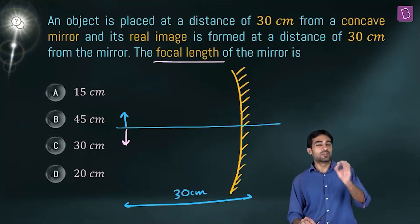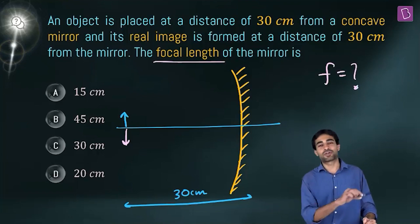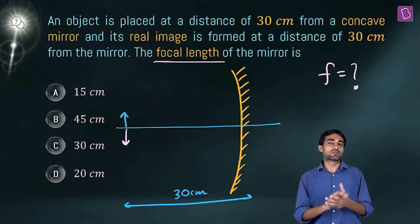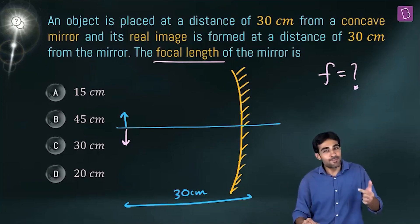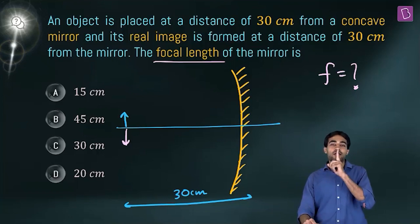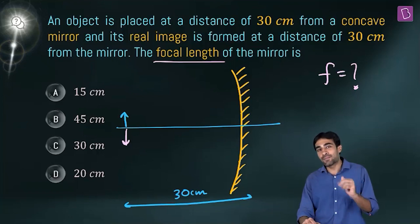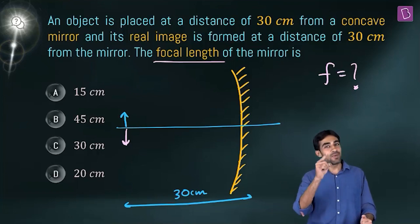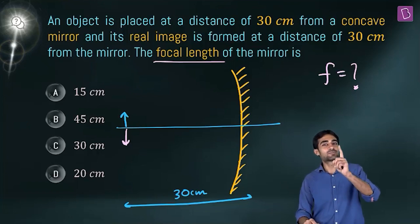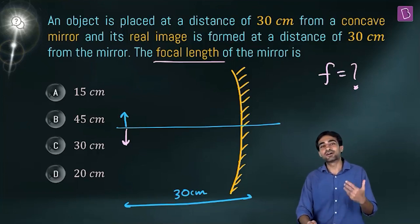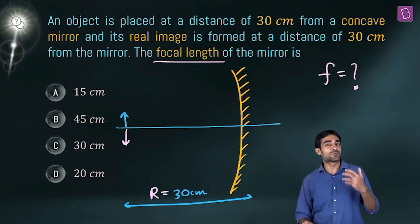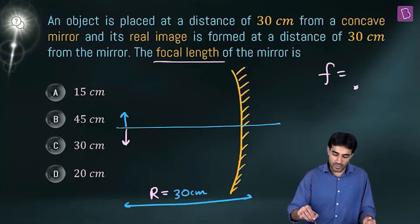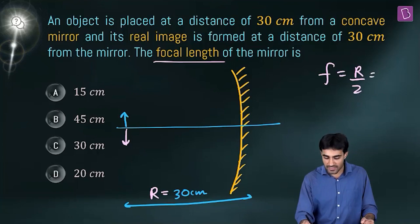We need to find the focal length. When the object is placed at the center of curvature, the image is also formed at the center of curvature. In our case, object distance equals image distance, so the object must be placed at the center of curvature. The radius of curvature is 30 centimeters, and focal length equals R/2, so focal length is 30/2 = 15 centimeters.